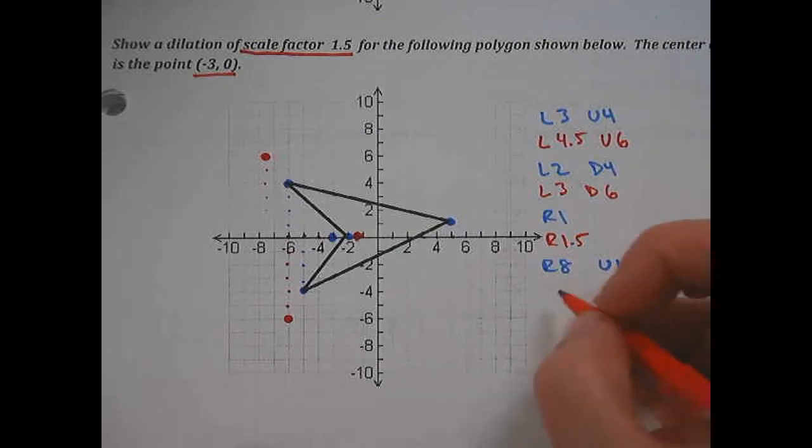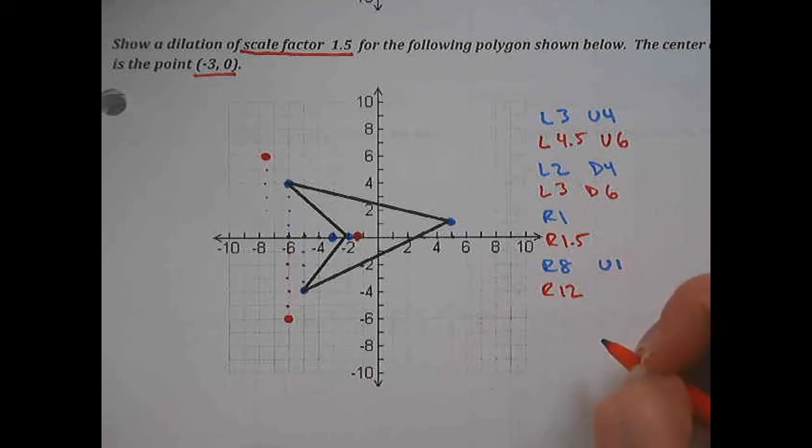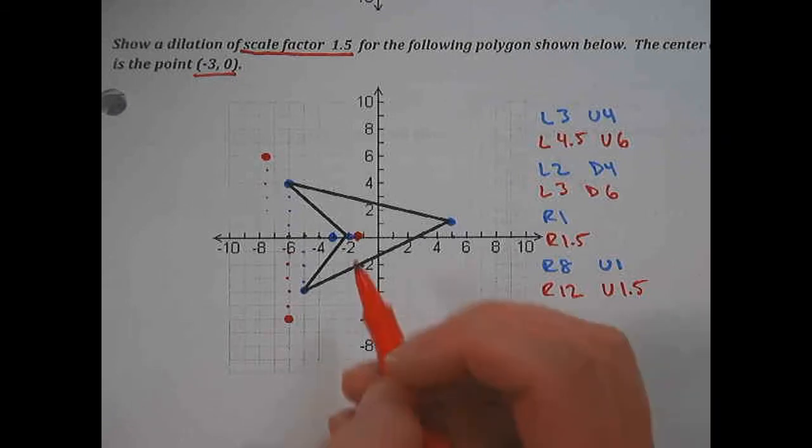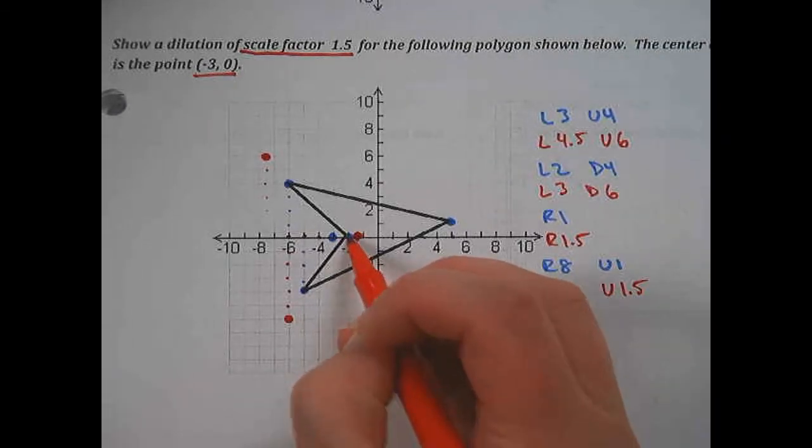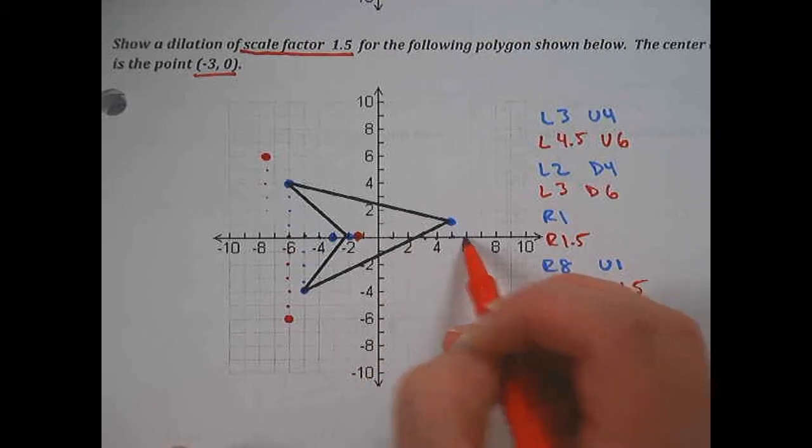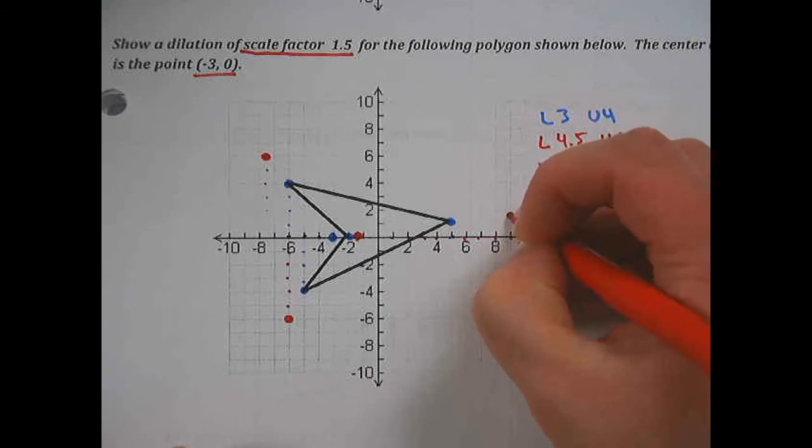Instead of going right 8, we're going to go right 12, because 8 times 1.5 is 12. And we're going to go up 1.5, since 1 times 1.5 is 1.5. So starting back at our center of dilation, we go right 1, 2, 3, 4, 5, 6, 7, 8, 9, 10, 11, 12, and up 1.5.